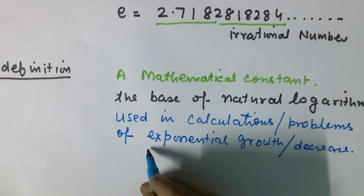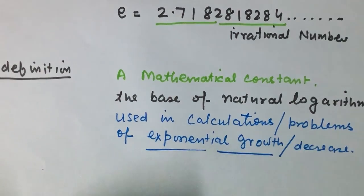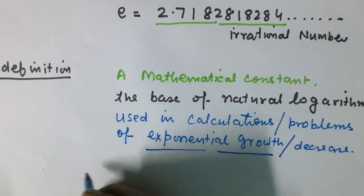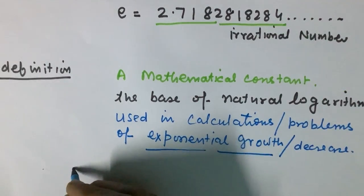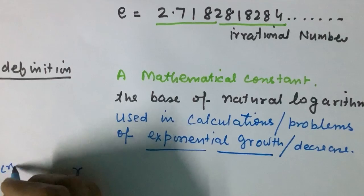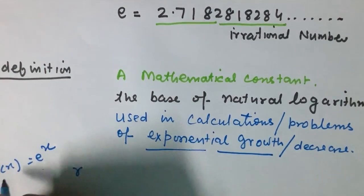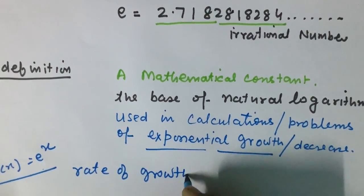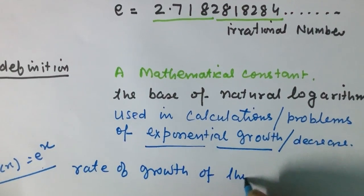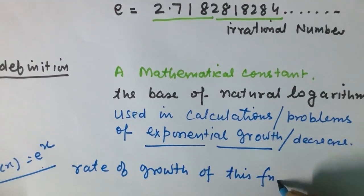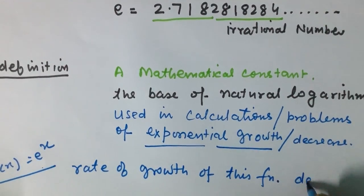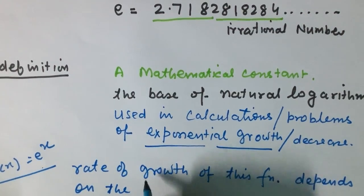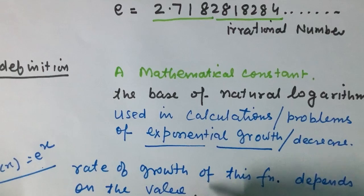What does exponential growth mean? It means that if we have a function, the rate of growth of that function depends on the present value of the function. As the value increases, the rate of change also increases.